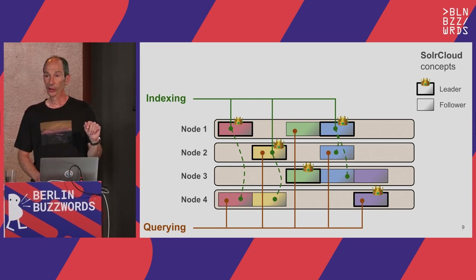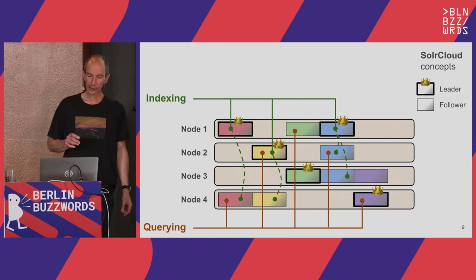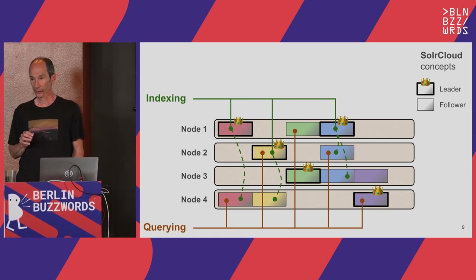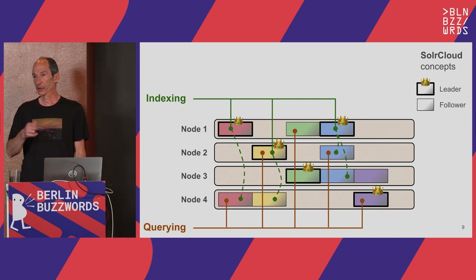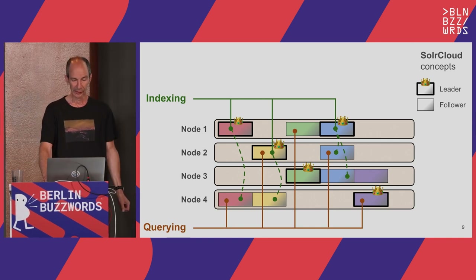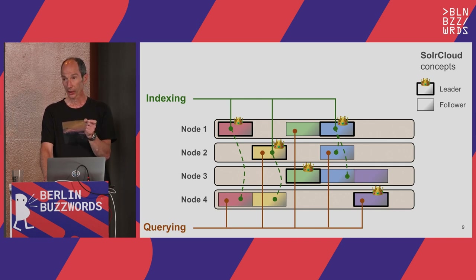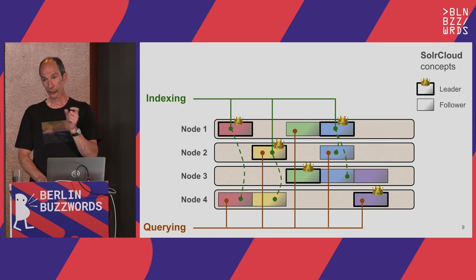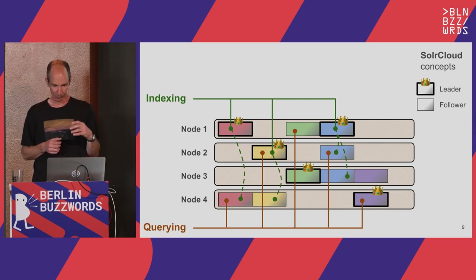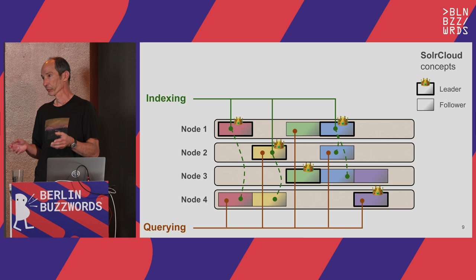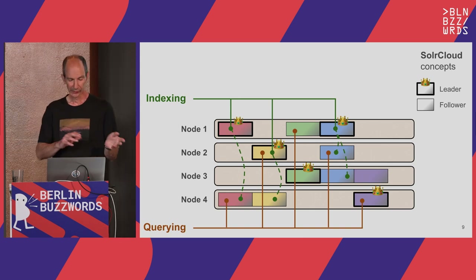When an indexing batch arrives, it is distributed to replicas of three of the shards of that collection — in this case because the batch only has documents belonging to those three shards, so no need to forward empty document sets to the green shard. It hits the shard leader replicas of those three shards. The leaders do indexing on their own local copy, then forward the indexing to the follower replicas, trying to forward to all followers for durability.